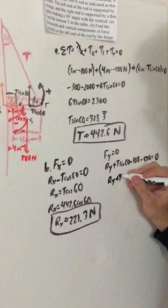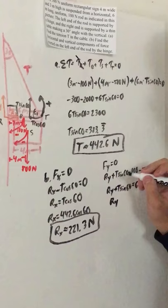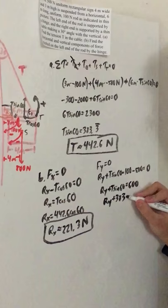So then we do Ry plus T sine 60 equals 600. And now what we do is substitute this equation. We've got T sine 60 equals 383.3. So we've got 383. I'm just going to approximate to 383.